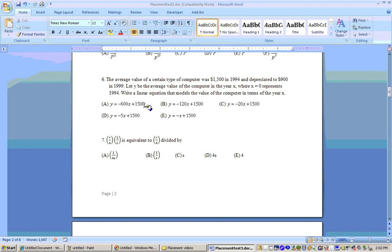Well, if 1994 is year zero, then we have a point that in year zero it was worth $900. Oh sorry, in year zero, 1994 is worth $1,500, and five years later in 1999, it was worth $900.